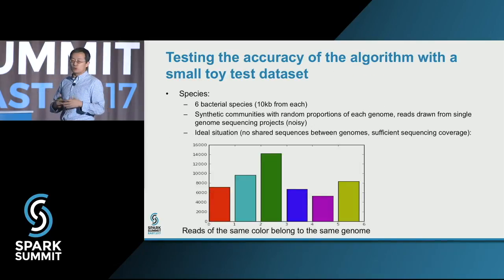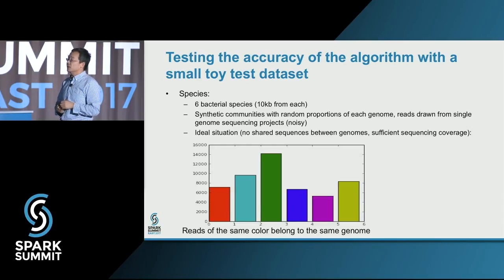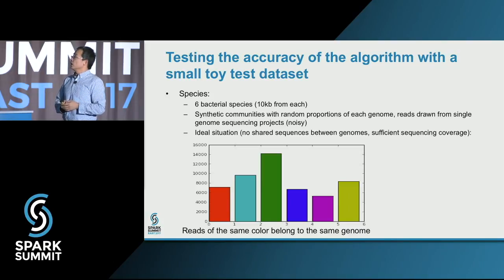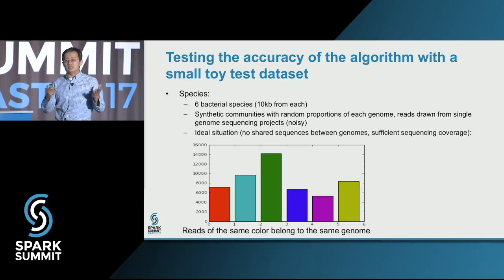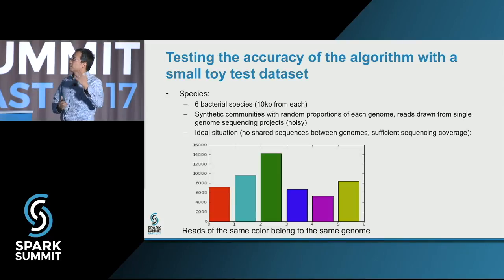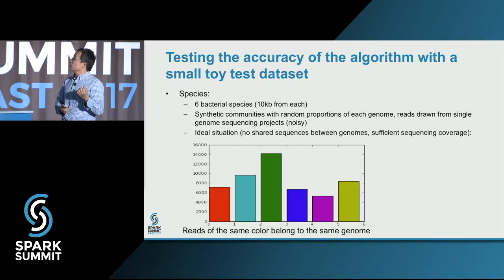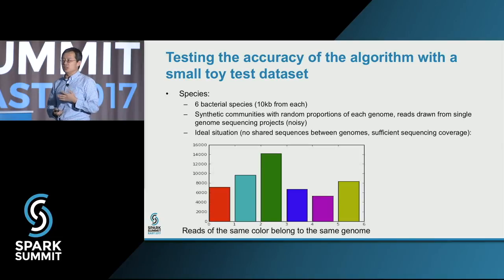To verify that the algorithm is correct, we constructed a simple toy dataset with six small microbial species, each about 10 KB. We synthesized metagenome communities and introduced some noise. With sufficient sequencing coverage, we showed that the algorithm works perfectly with this toy data.